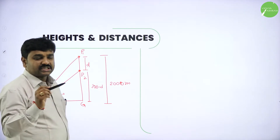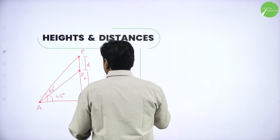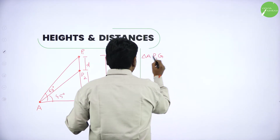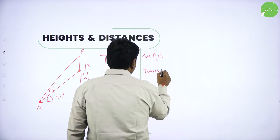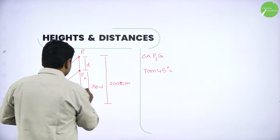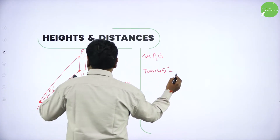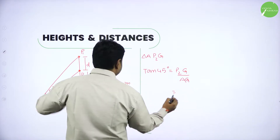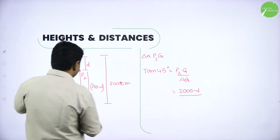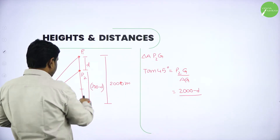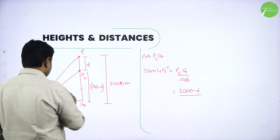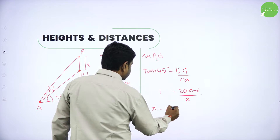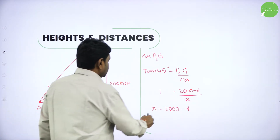From two triangles our task is to find the distance between them. Taking the lower triangle AP2G: tan 45 equals opposite over adjacent, that is P2G divided by AG. P2G is 2000 minus D, and AG is unknown, call it X. Since tan 45 is 1, rearranging gives X equals 2000 minus D meters. Call this equation 1.